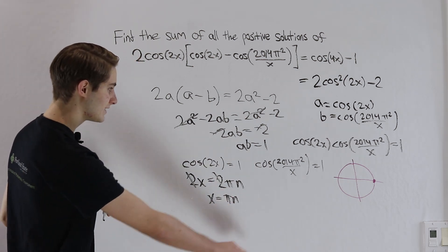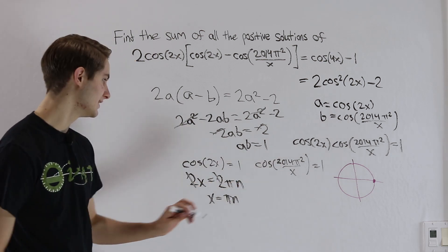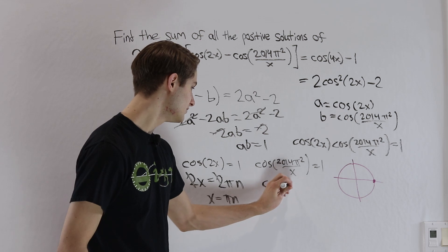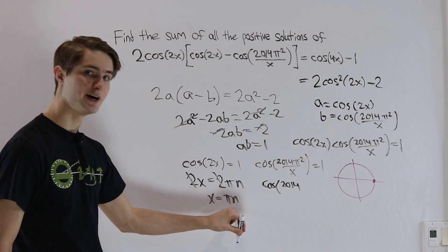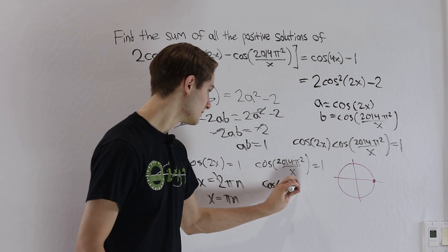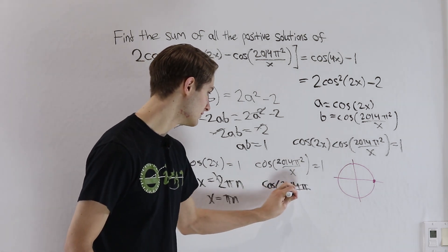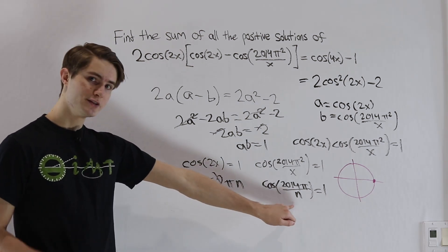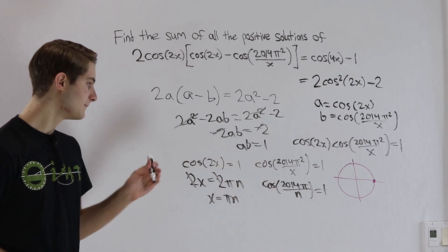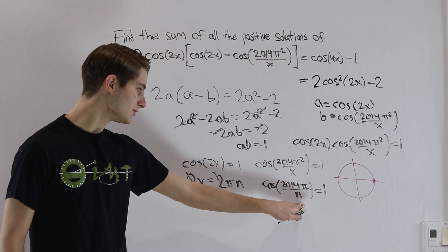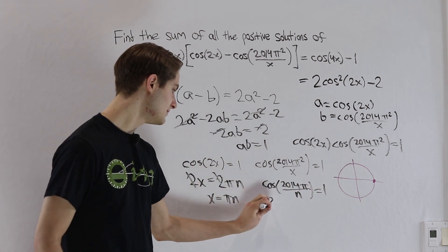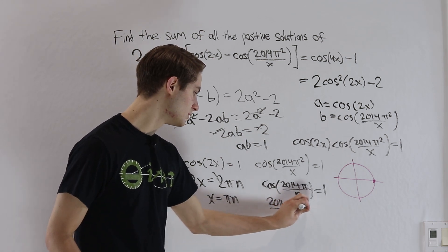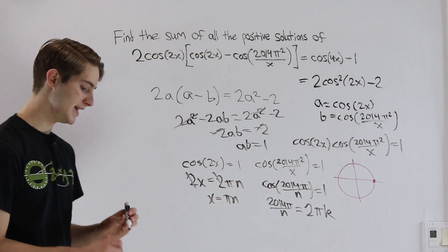Now what we can do is take this for x and substitute it into our second equation. So that's going to get us that the cosine of 2014, notice we have π squared over π, so those are going to cancel out. We'll just have 2014π over n, and this has to equal 1. If we use the same reasoning on this cosine as we did for the first one, if we want the cosine of 2014π over n to give us 1, that means that the angle on the inside is going to have to equal 2π times some other integer k.